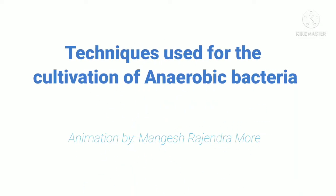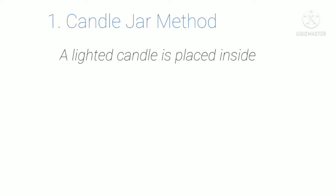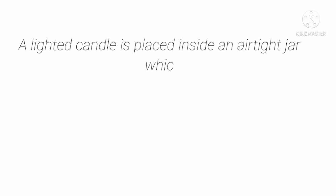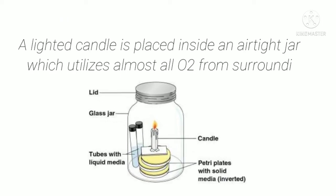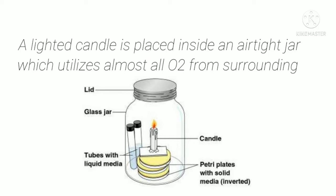Techniques used for the cultivation of anaerobic bacteria. The first method is the candle jar method. A lighted candle is placed inside an airtight jar, which utilizes almost all the oxygen present in the surrounding. This is a very simple technique that can be used in the absence of sophisticated equipment.